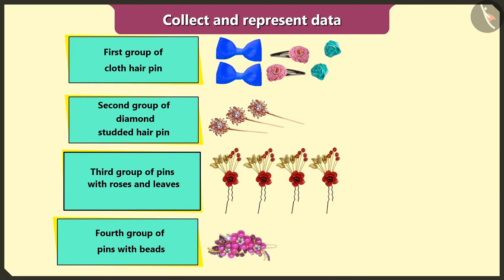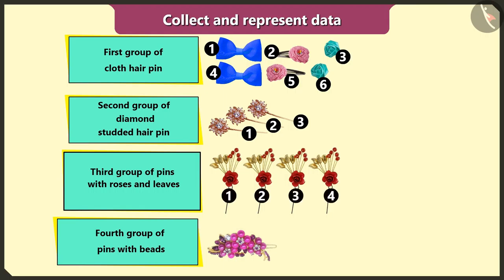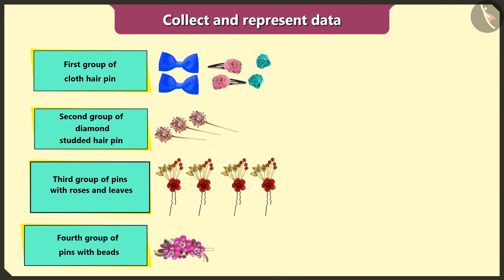Now I will count the hairpins in each group. I have six hairpins made of cloth. Three diamond studded hairpins. Four hairpins with roses and leaves. And one big hairpin with beads.